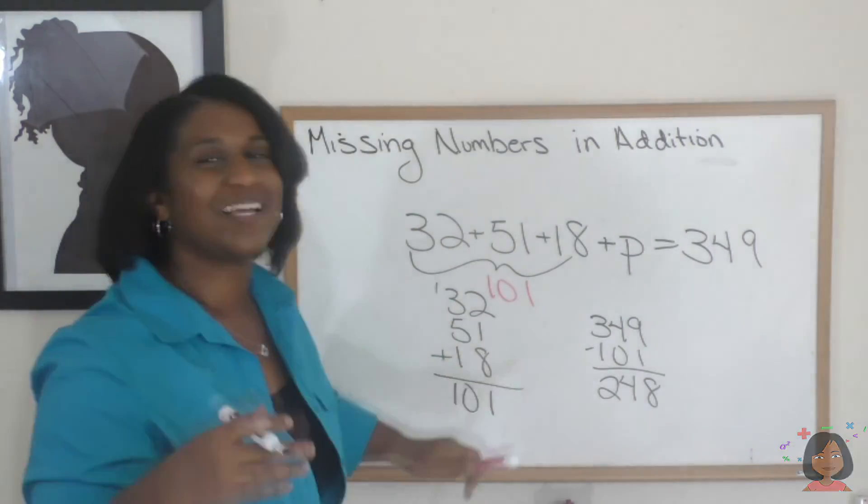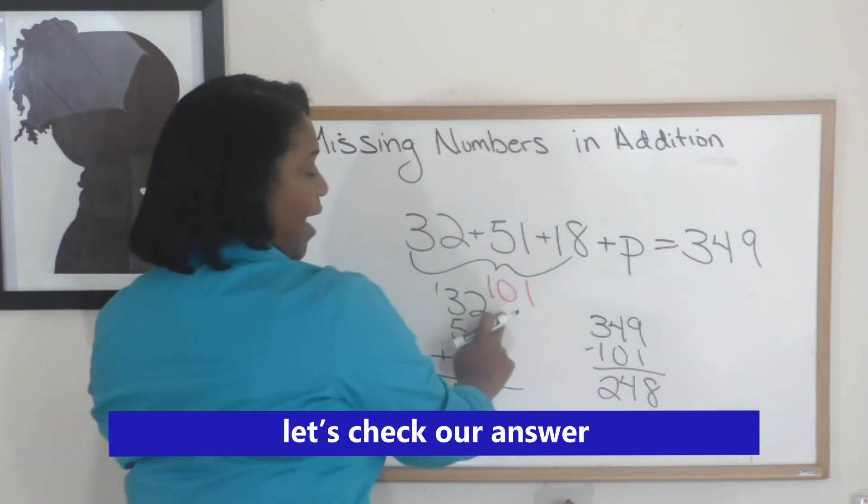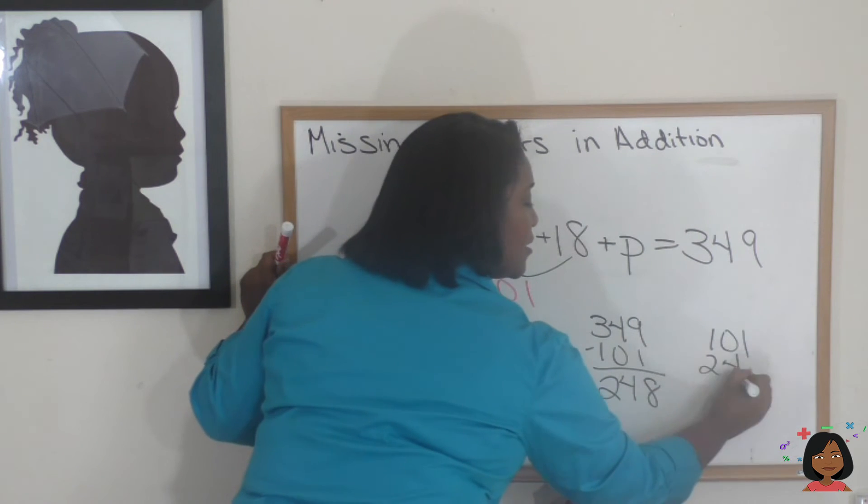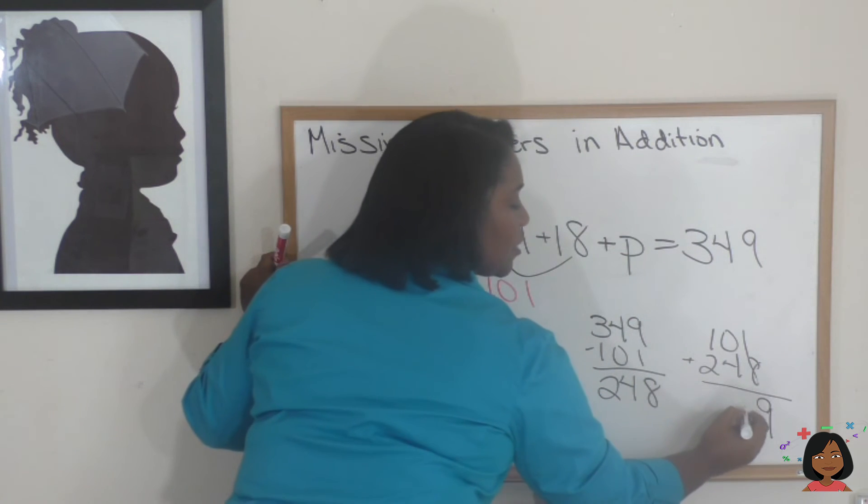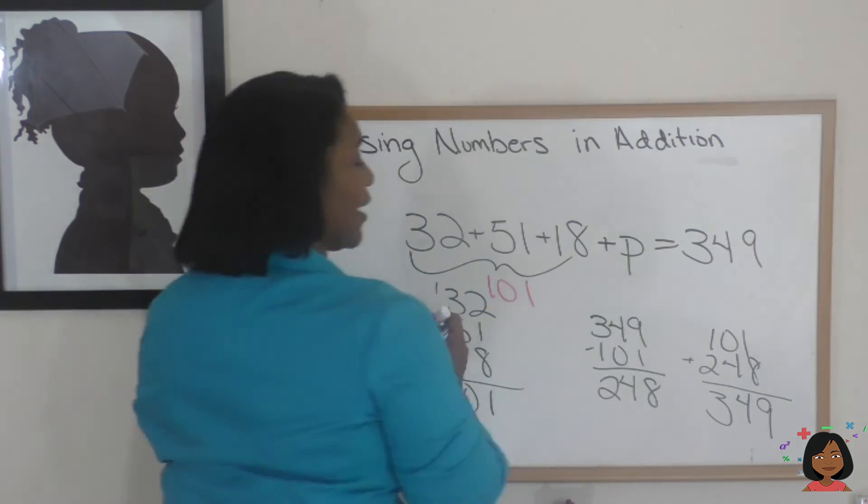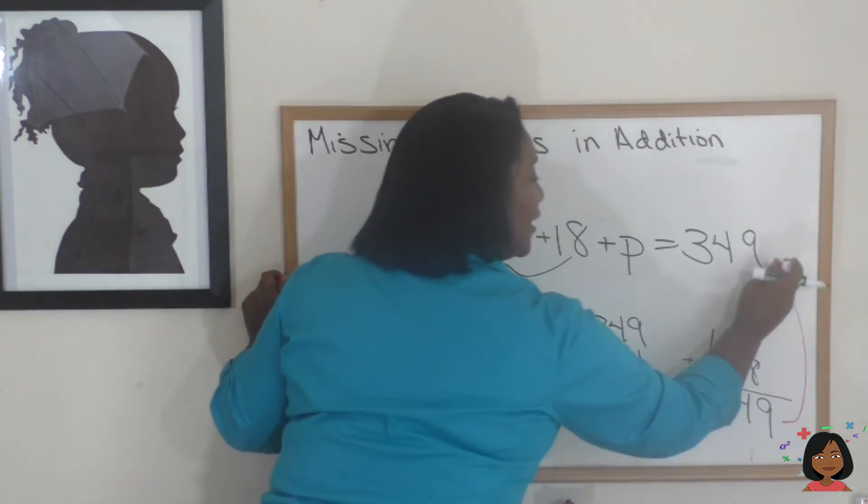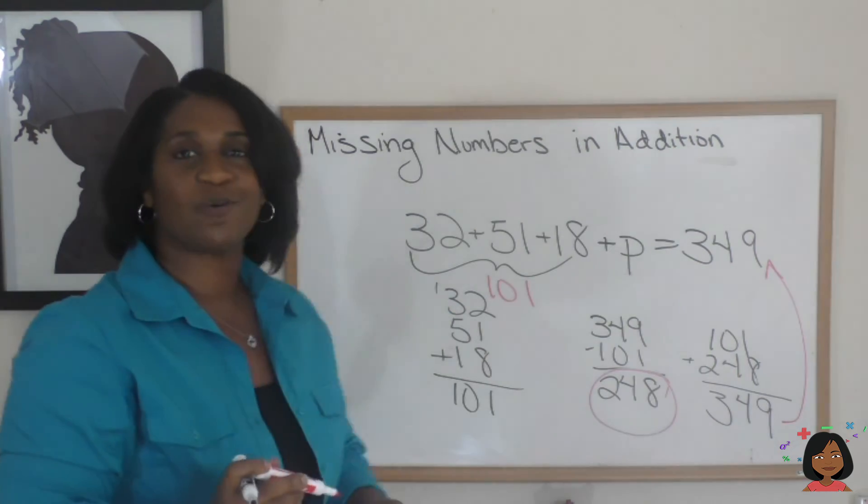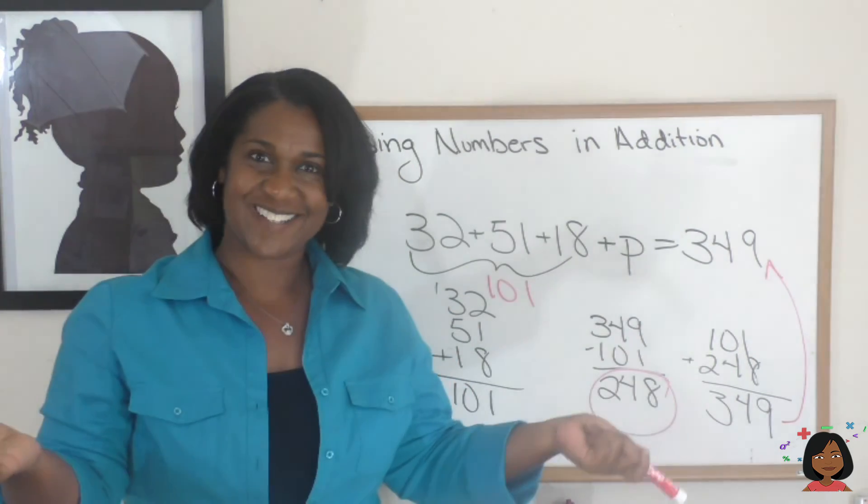But we're not going to just rely on that. We think that's the answer, but let's check it. So let's add our 101 to our 248 and see if it gives us our total. 8 plus 1 is 9. 4 plus 0 is still 4. And 2 plus 1 is 3. And look at that. It works out. So it must be that P equals 248. Still works.